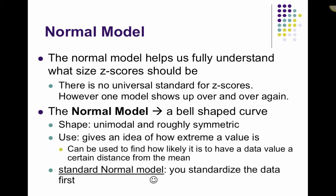So the normal model is a bell-shaped curve, so the distribution of the data would be unimodal and roughly symmetric. The use of the normal model is to give us an idea of how extreme a value is. So the further away from the mean, the more extreme a value is going to be.